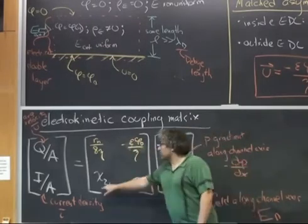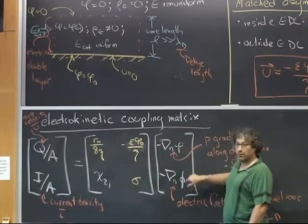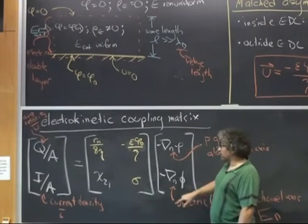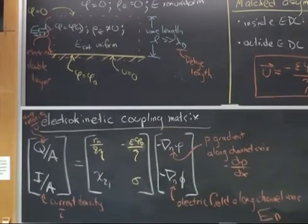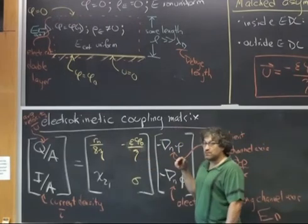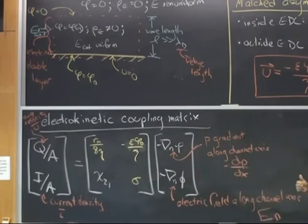You can imagine that when we go to derive this, we will assume that we have a pressure but that we have no electric field. We'll calculate what the current density is, and that will give us this chi. But just because we considered systems in isolation when we calculated out what these components are, doesn't mean that this can't then be applied to systems that have a lot of stuff going on.